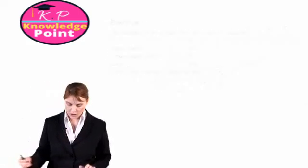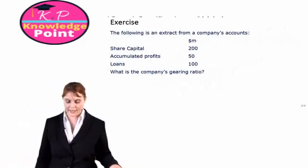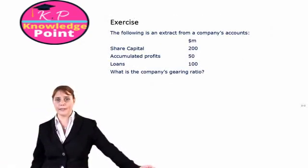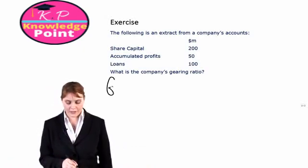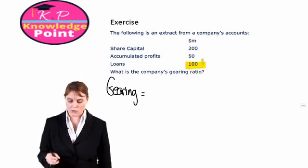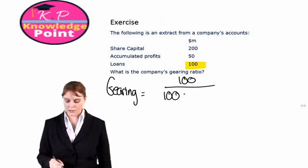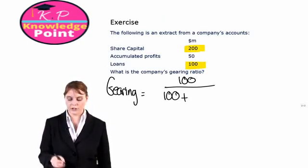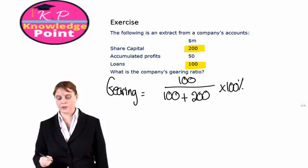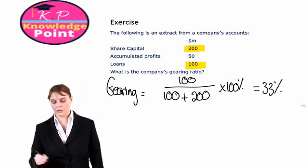Let's have a look at an exercise. We have the following extract from a company's accounts. We are given their share capital, accumulated profit, and loans, and we are asked what is the company's gearing ratio. Very straightforward — we just plug in the numbers. We have their debt, which is their loans, of 100, divided by debt plus their equity, which is their share capital, 200. Multiplying by 100% to get it as a percentage, we get 33%.